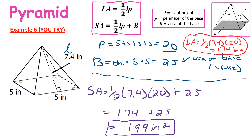For the lateral area you should have gotten 174 square inches, shown here in red. For the surface area, 199 square inches. Hopefully you got them correct; if not, pause the video and analyze the work here a little more.